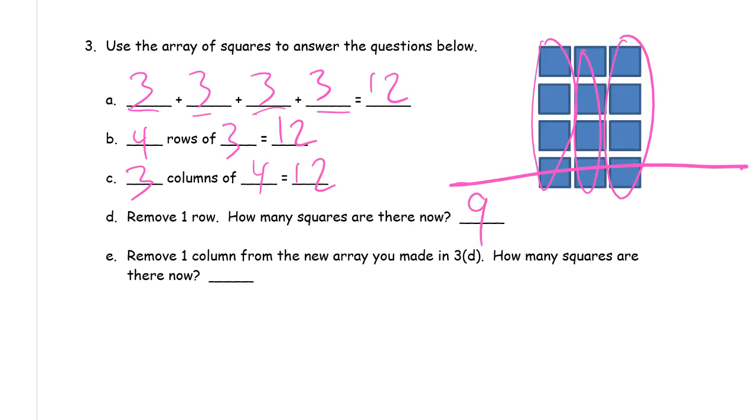Now, it says remove a column from what I have left. So, I'm going to remove a column. And now, this is what I have left. I'll outline it in green. This is what I have left. And you can see that there are six left now.